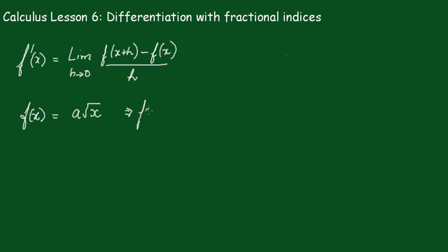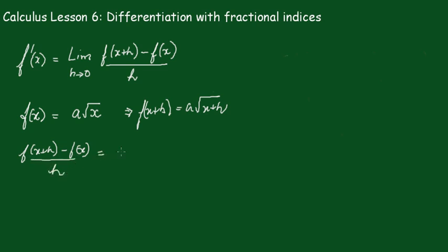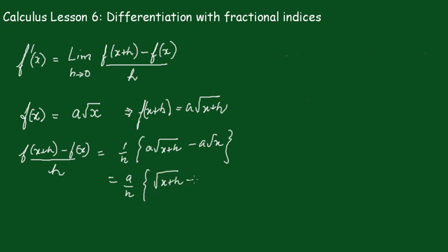We write f(x+h) equal to the square root of (x+h). So f(x+h) minus f(x) over h is equal to a/h times the square root of (x+h) minus the square root of x.